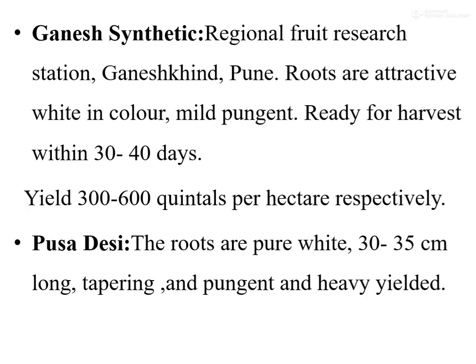The first variety is Ganesh Synthetic, released from the regional fruit research station at Ganesh Khirsundi. Its roots are attractive and white in color, mid-pungent, and ready for harvest within 30 to 40 days. The average yield of Ganesh Synthetic is 300 to 600 quintals per hectare.